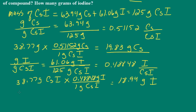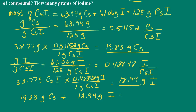Let's check our answer. We add the grams of iodine and grams of cesium, and we should get 38.77 grams. So 19.83 grams of cesium plus 18.94 grams of iodine gives us 38.77 grams — confirmed.